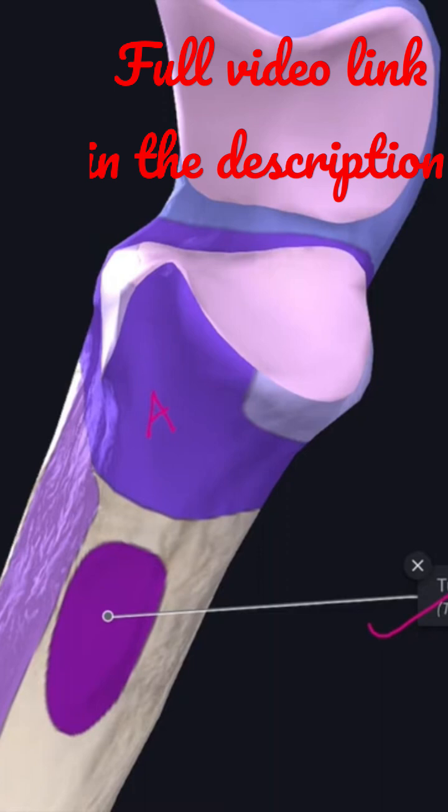The lower end of the ulnar tuberosity is connected with the corresponding part of the radial tuberosity by the oblique cord, which slopes downwards and laterally and represents the degenerated remnant of flexor pollicis longus.